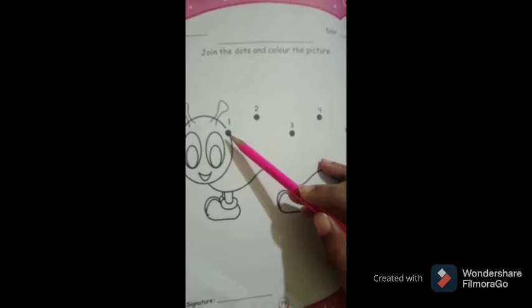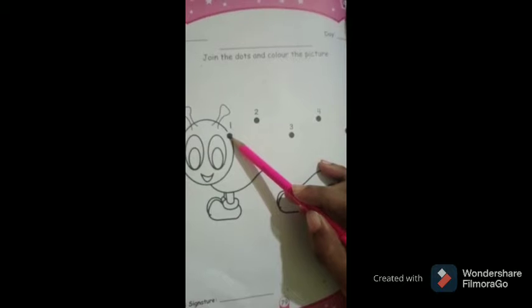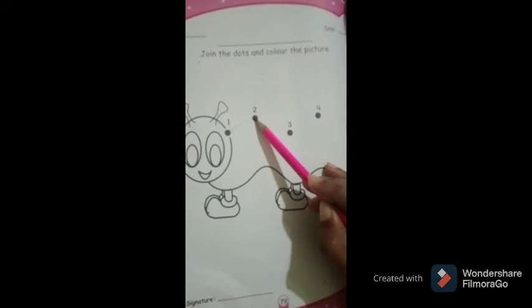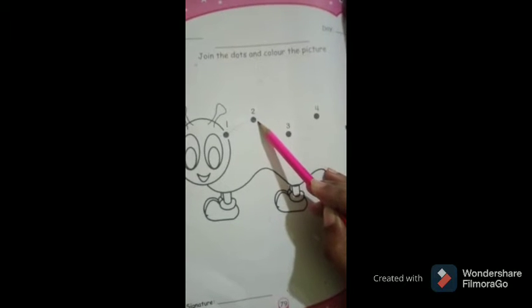First of all put the pencil on dot, on one, and join the dot with two like this. Then number three, next number four, next number five like this.